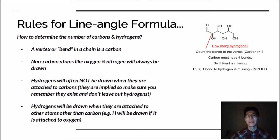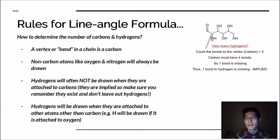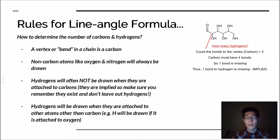Definitely practice the line-angle formula and try to get a good understanding of what's going on. This is really important for organic chemistry, so you should practice figuring out how many carbons there are, how many hydrogens there are, and so on. You just negate the hydrogens found on carbon — those are the implied ones.